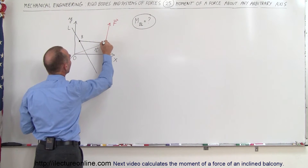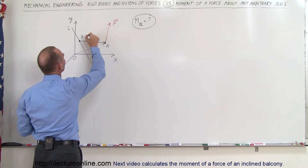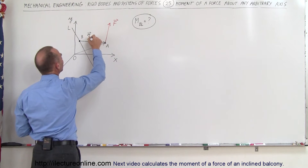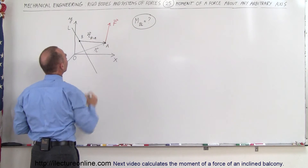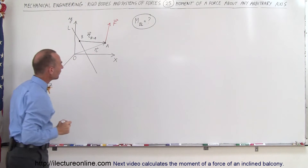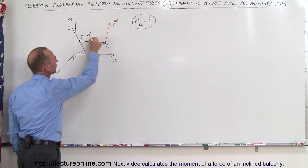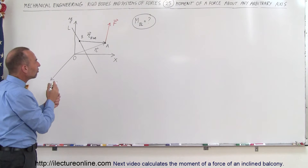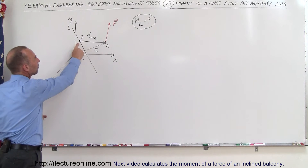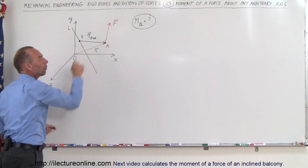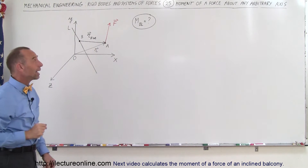We then draw a position vector from B to A, so this would be R_BA — from B to A. This is the position vector from that arbitrary point on the axis to the point where the force is acting.